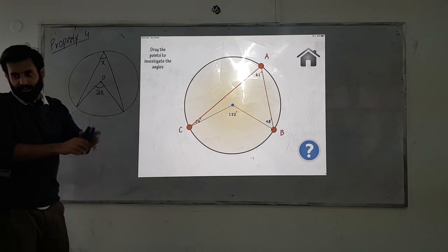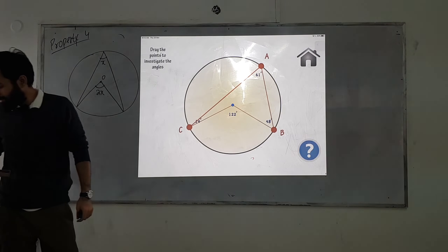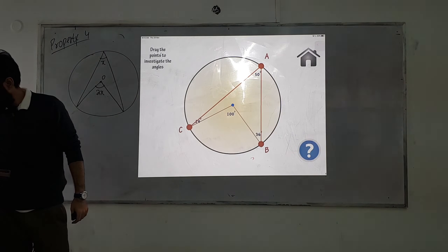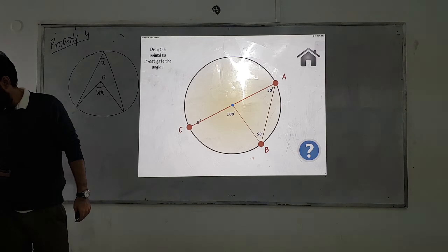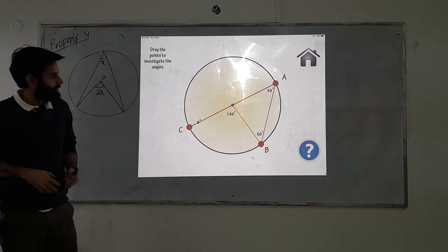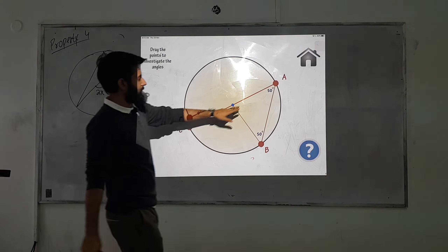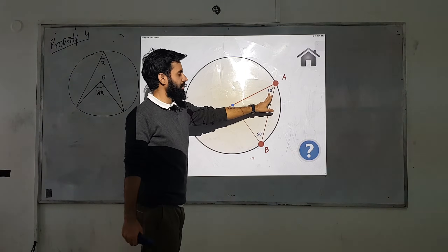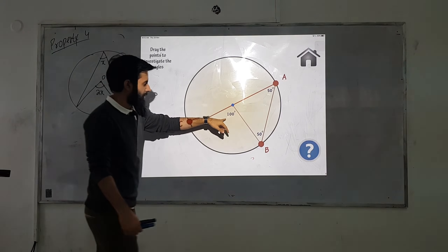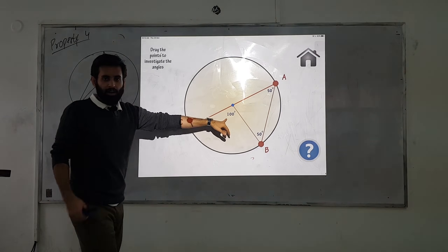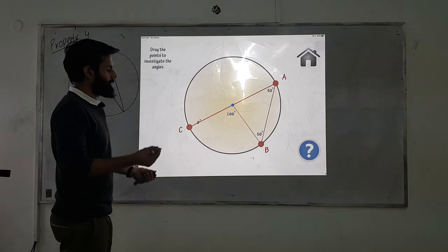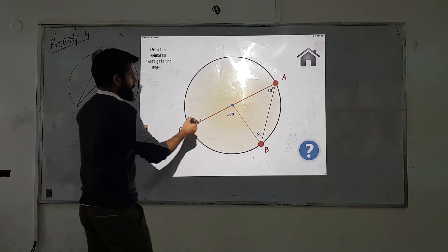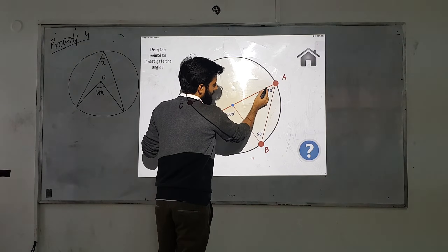This property won't always appear in the same form. Sometimes you might see the lines overlapping. Even then, note: here the circumference angle is 50 and the center angle is 100.